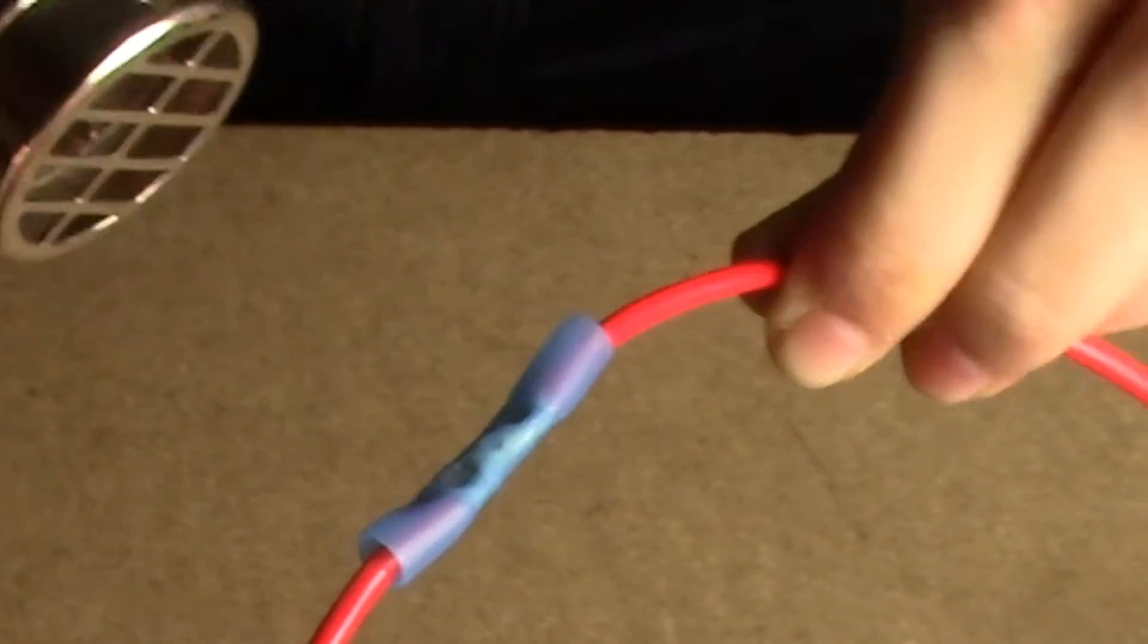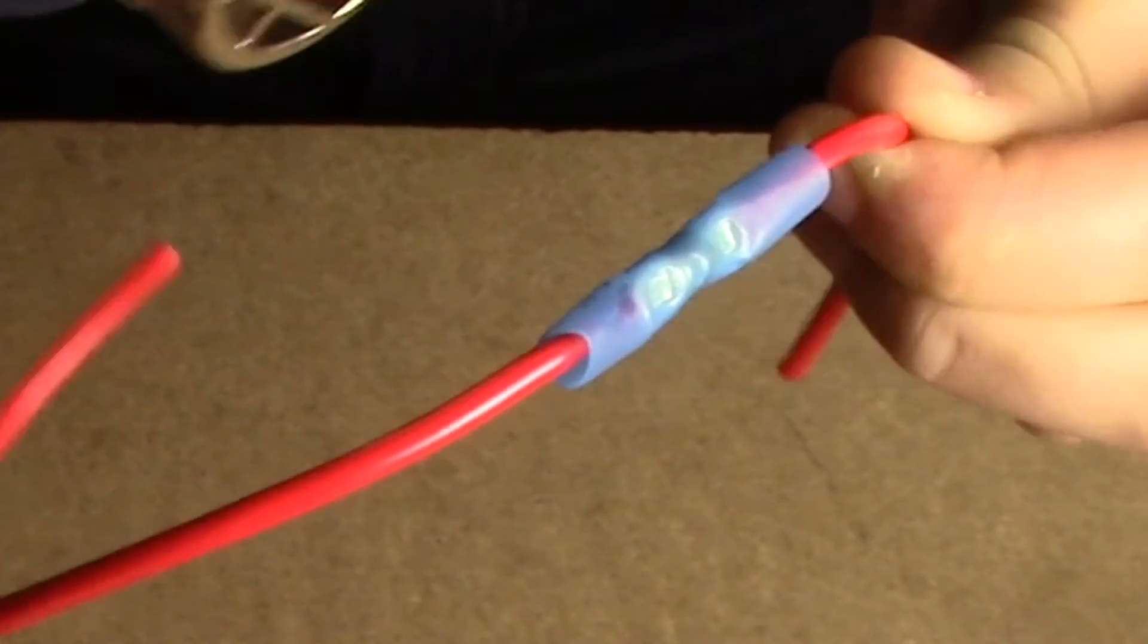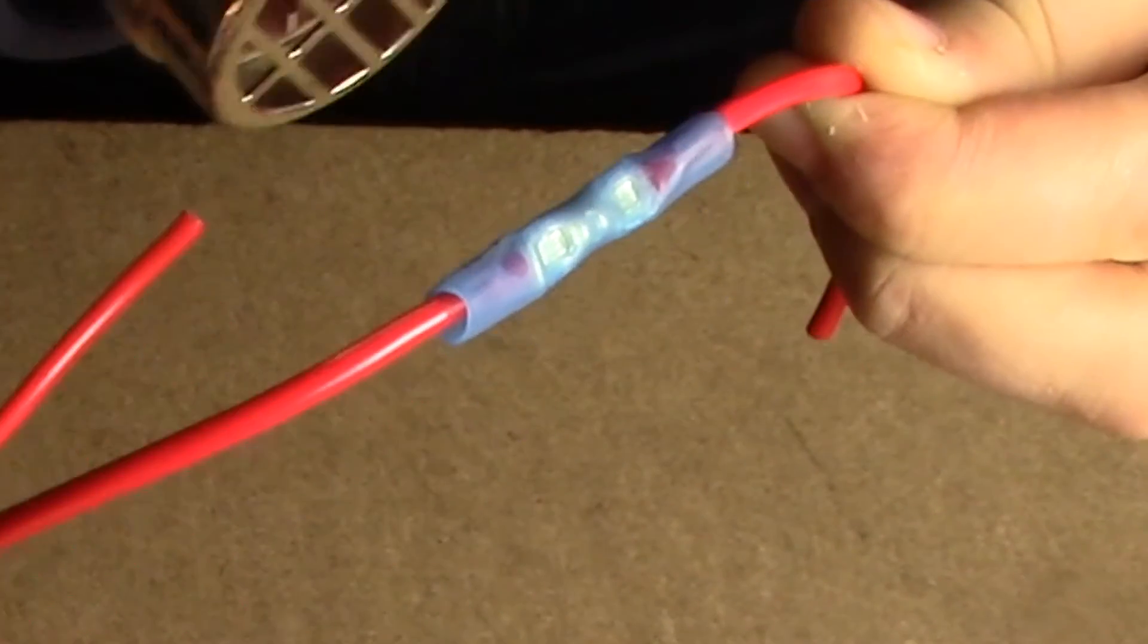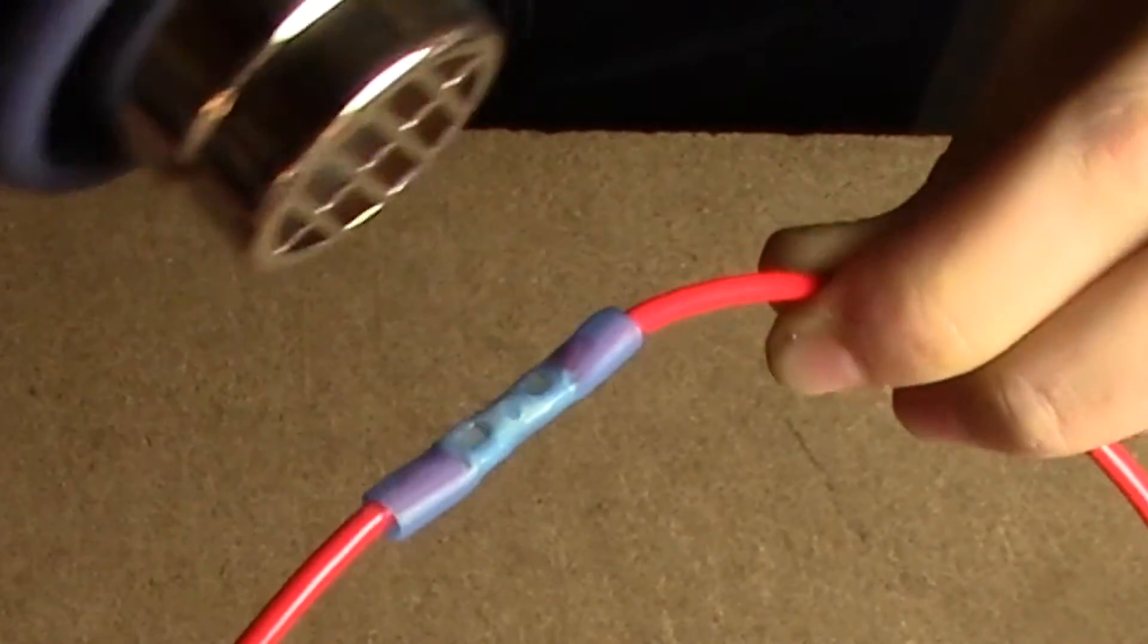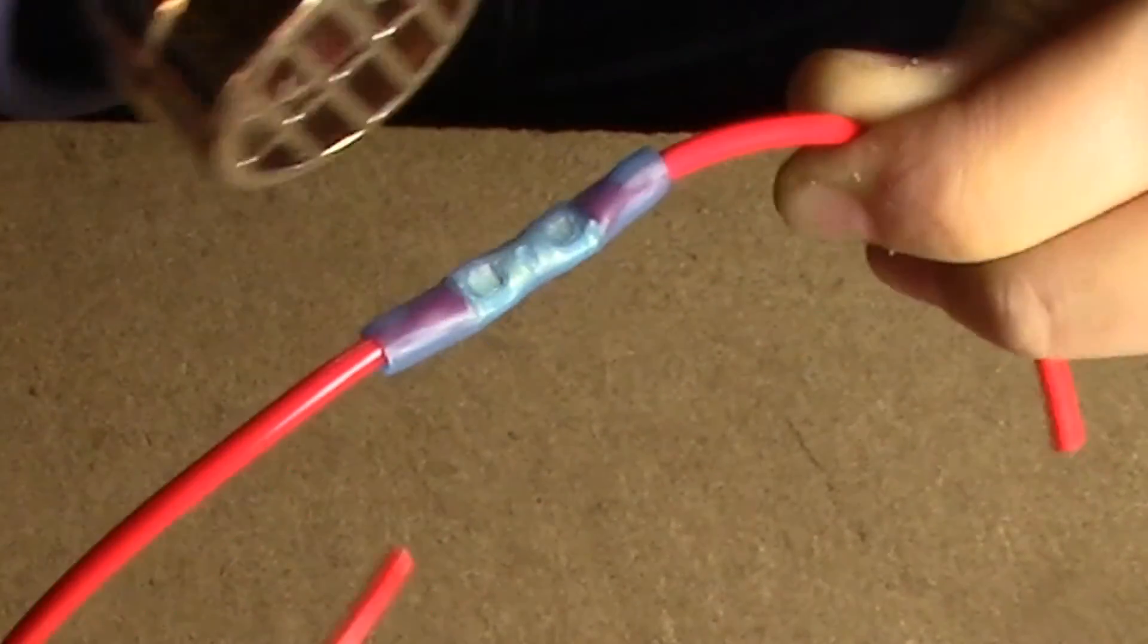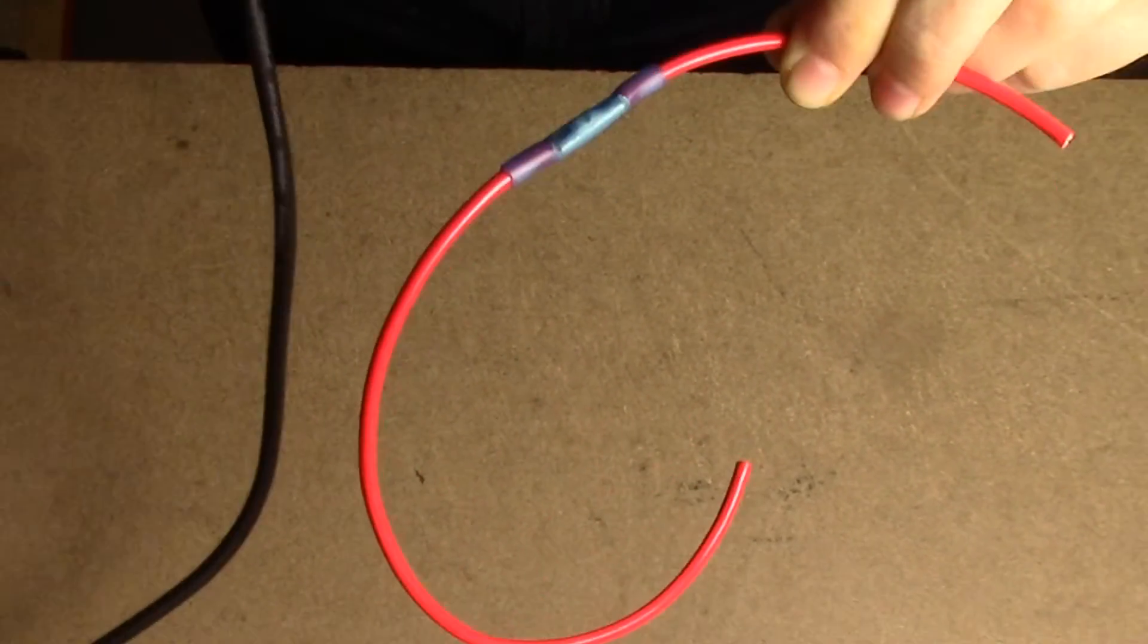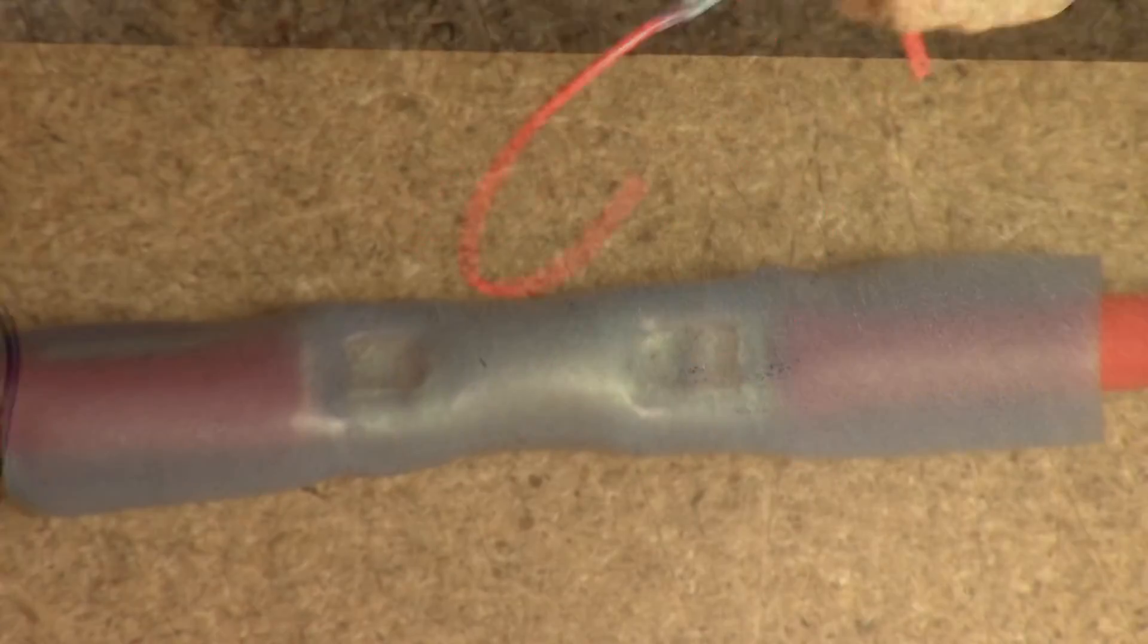As this happens, the glue on the inside will begin to melt and form the seal around. You'll see that the terminal itself darkens in color as this process happens, and again we will show you in close-up so you can see it.